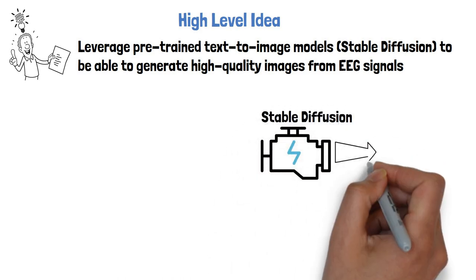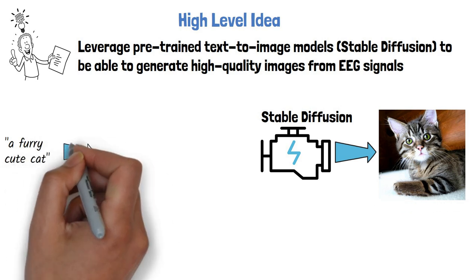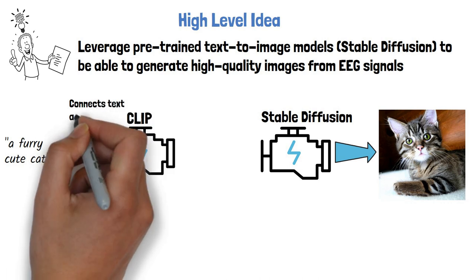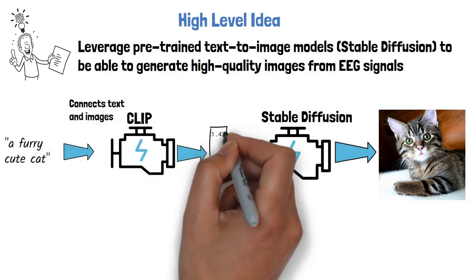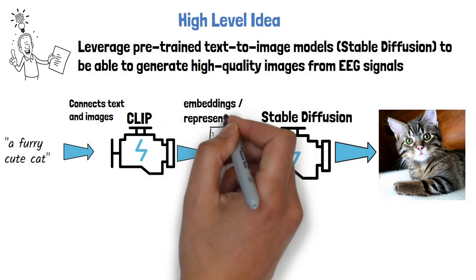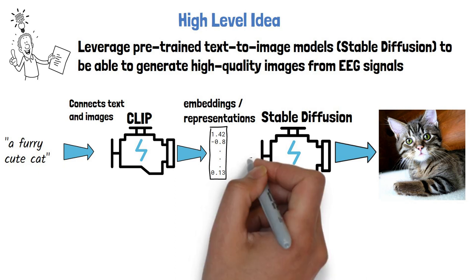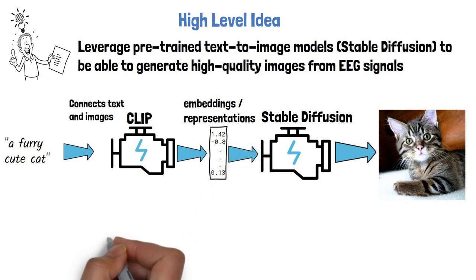When we use Stable Diffusion to generate a cat image from a text prompt, we first provide the text prompt to CLIP, which is a model that connects text and images. CLIP provides us with a vector of numbers called embeddings or representations, which grasp the semantic meaning of the text. Since CLIP connects text and images, the embeddings from a cat image are expected to be similar to the embeddings from the text prompt, which helps Stable Diffusion to generate that image.